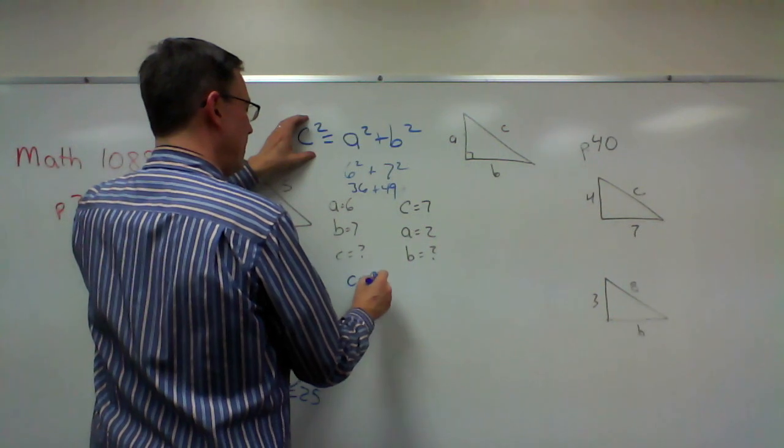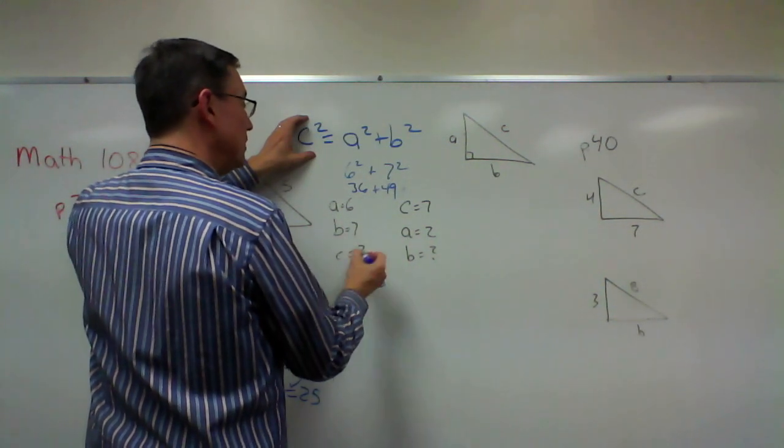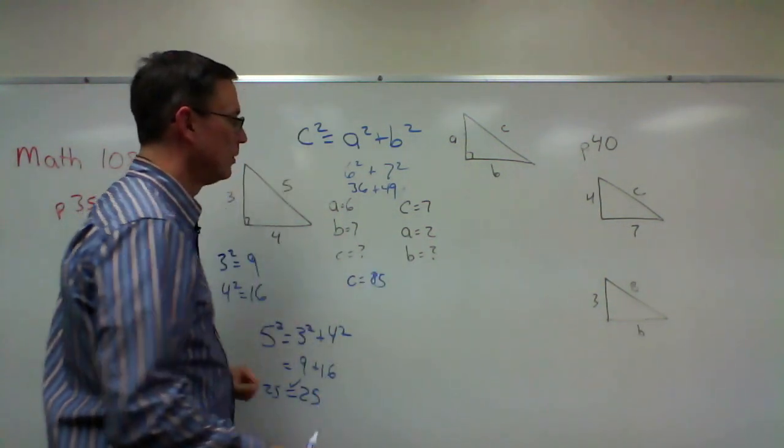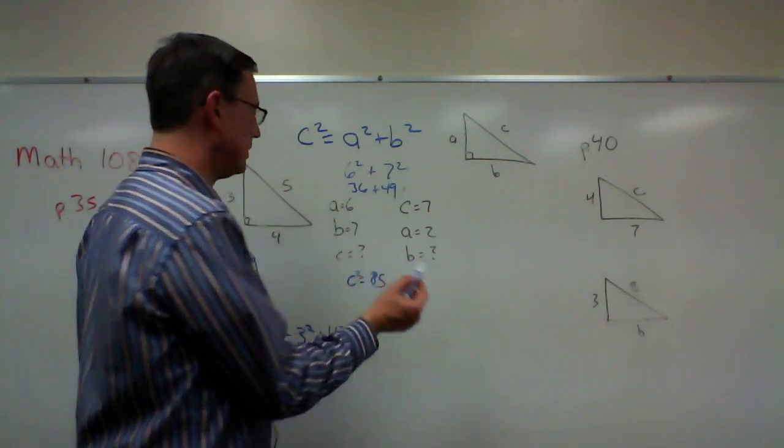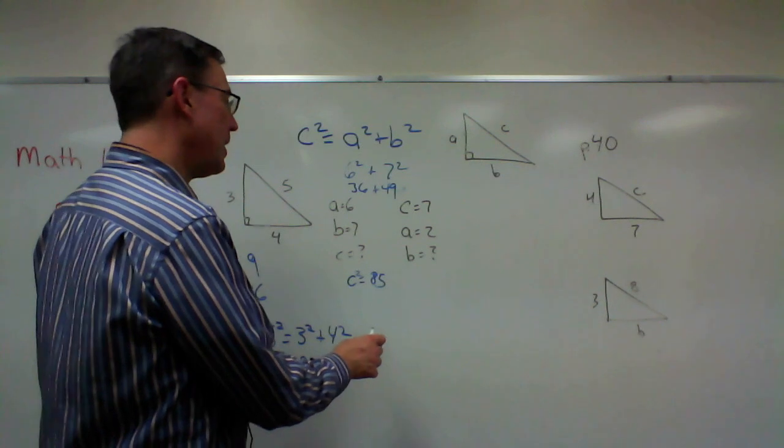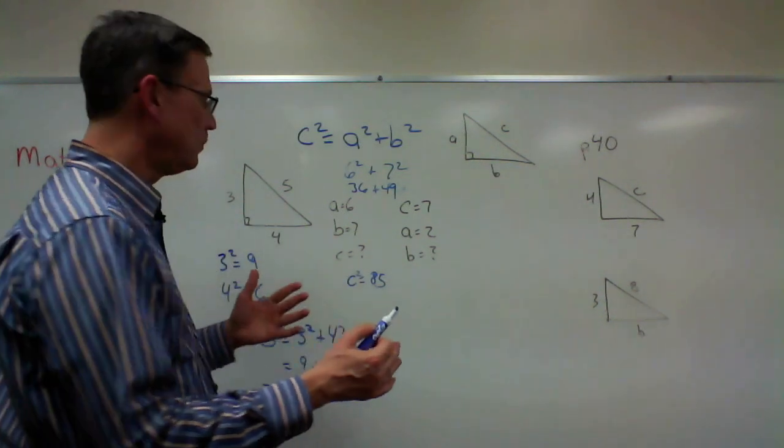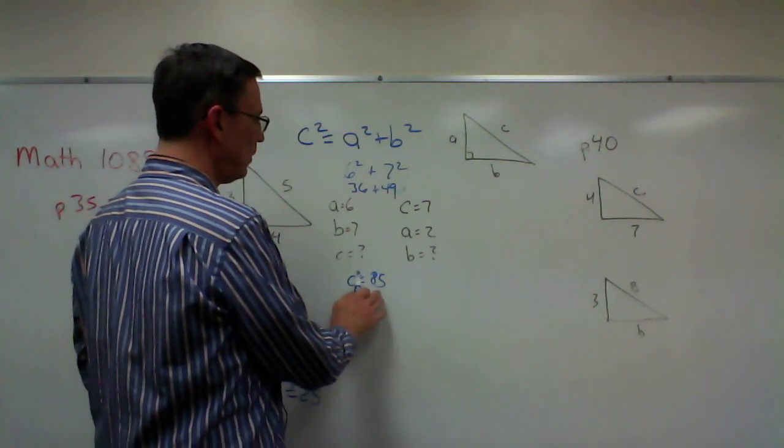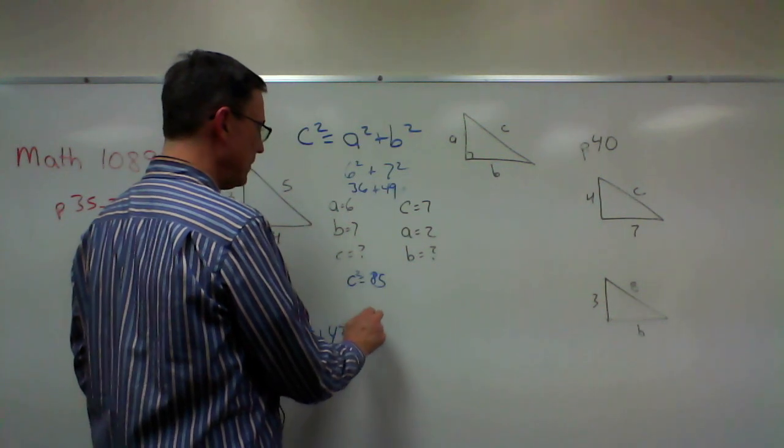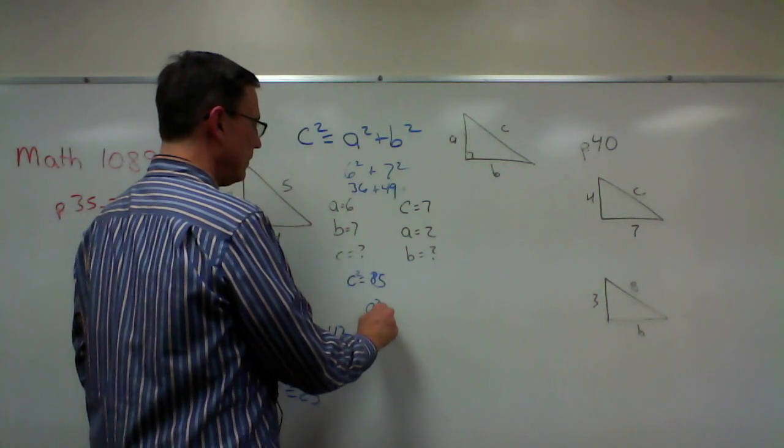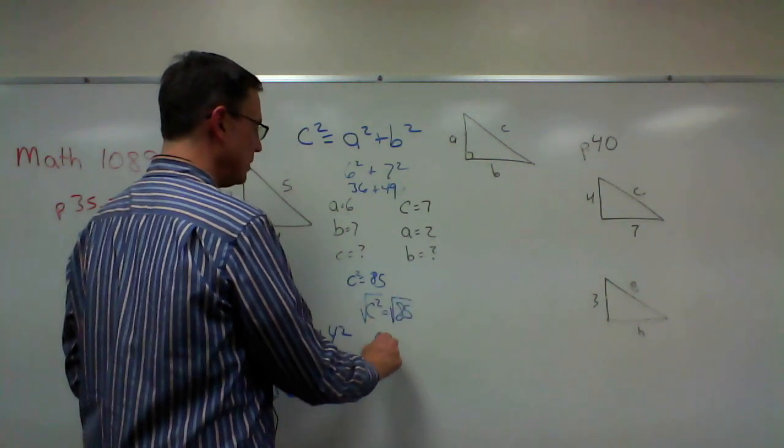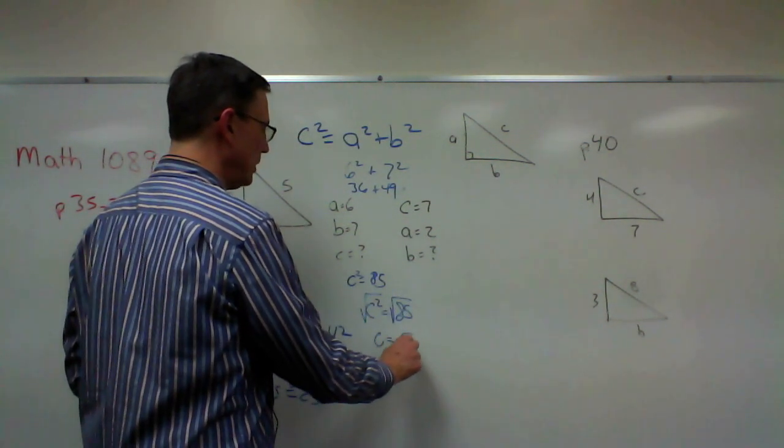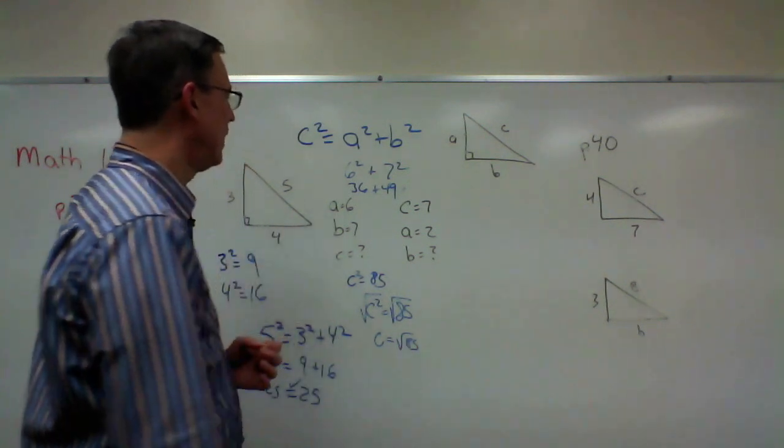85 for C, well C squared would be 85. And so to solve for C, say C squared equals 85. And then what we're going to be talking about in the next few pages is, to find out what the actual value for 85 is, we're going to take the square root of both sides. So C would actually equal the square root of 85.